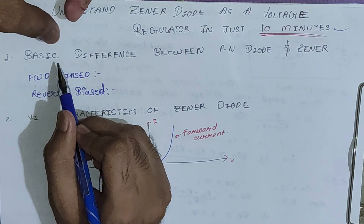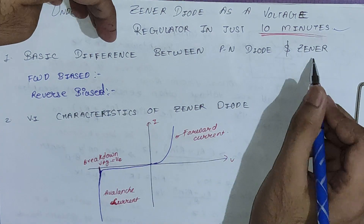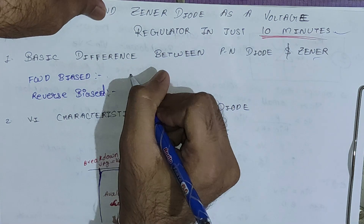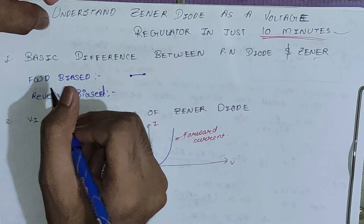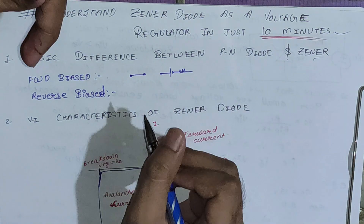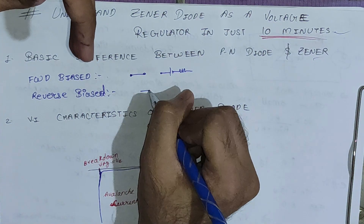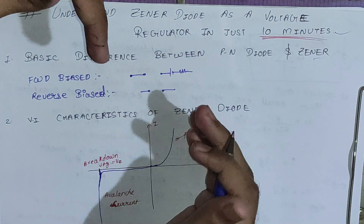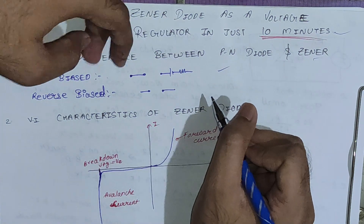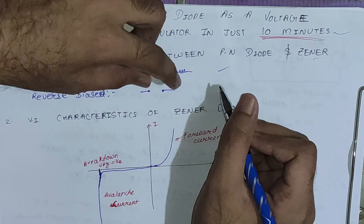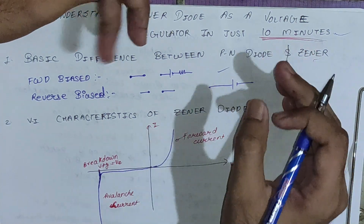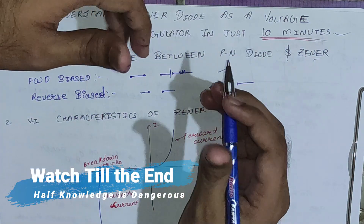The first thing we should know is the basic difference between a PN diode and a Zener diode. For a PN junction in forward bias, you replace it with a short circuit (ideal) or a voltage source with forward resistance (non-ideal). In reverse bias, a PN diode is replaced by an open circuit. For a Zener diode, forward bias is the same, but in reverse bias, instead of an open circuit, it is replaced by a voltage source. Due to this property, Zener diode is used as a voltage regulator in reverse bias.